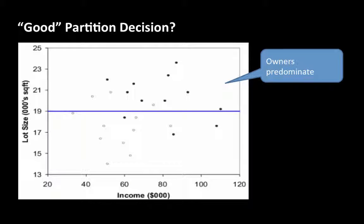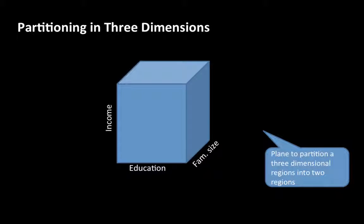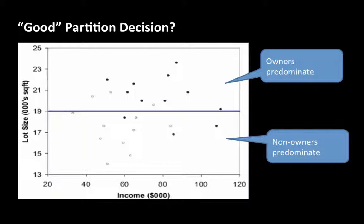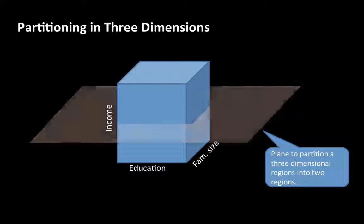So what do we mean by a good partitioning decision? In one node, owners predominate; in the other node, non-owners predominate — which is much better than the equal mix we had originally. Since it has only two dimensions, we were able to show it visually. If the input has three dimensions — three predictor attributes — then each division is dividing into a three-dimensional region, whereas earlier each division was dividing into a two-dimensional region. Other than that, it's pretty much the same process.